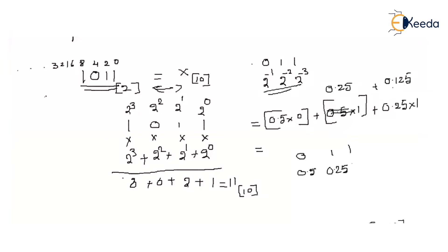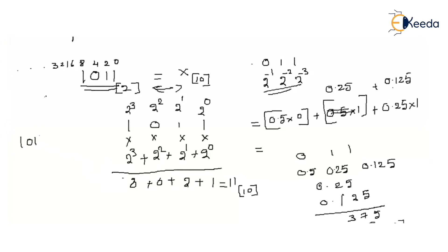Adding these: 0.25 + 0.125 = 0.375. So the total for 1011.011 gives 11.375 as its decimal equivalent. That is the exact decimal representation.